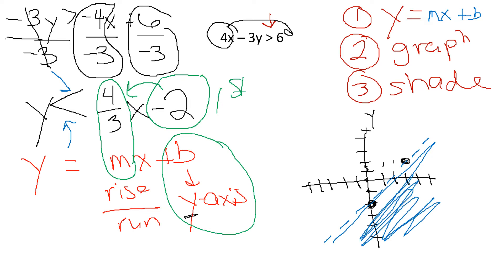So your first step: Y equals MX plus B. Your M is your rise over run. Your B is where it crosses the Y axis. Always plot your B first. From there, rise and run. Dot your line — or if it's equal to, make a solid line — and then shade it in.